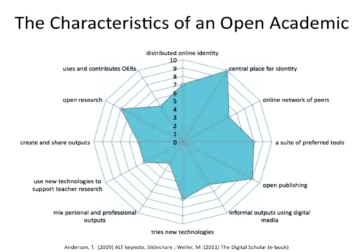I started thinking about open practice in 2008 when I attended the first MOOC, the CCK08. That really forced me to be open — I didn't have a blog before that, and it was a requirement or strongly recommended to have a blog. It was a scary moment, I remember. Since then I've been thinking a lot about what are the characteristics of being open. For all of us, that means being an open academic. Terry Anderson has written about this in 2009 and Martin Weller has published an e-book called 'The Digital Scholar' where he talks about the characteristics of an open academic.